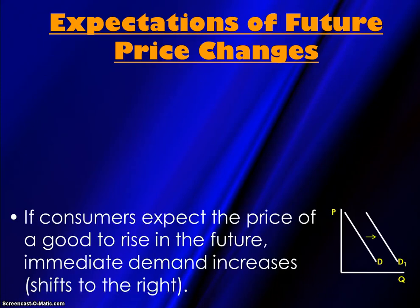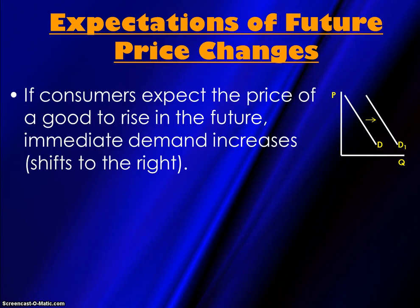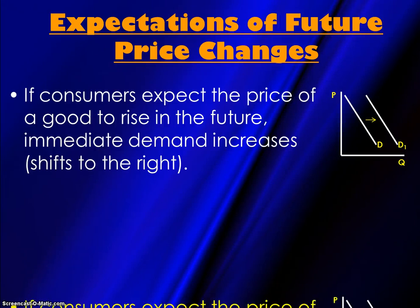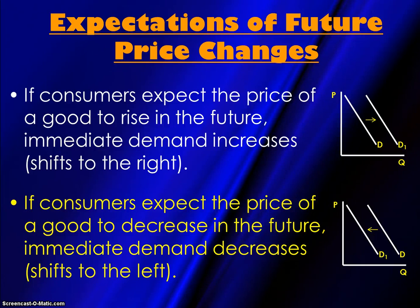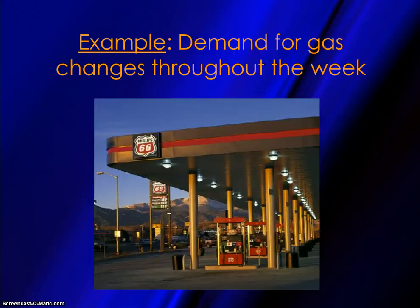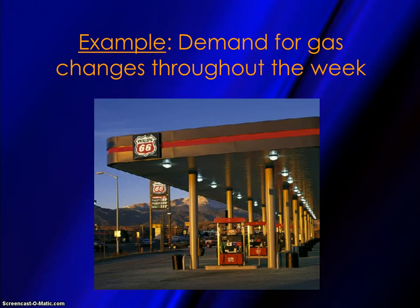The E in TIRES stands for Expectations of future price changes. If consumers expect the price of a good to rise in the future, then immediate demand will increase because people want to get the good now while it's still cheap. Or, if consumers expect the price of a good to decrease in the future, then immediate demand will decrease because people want to wait and buy it later. For example, if you're driving home from school on Thursday and you need gas, you know that on Fridays the price of gas almost always increases. Since it's Thursday and you know the price will go up tomorrow, you're probably going to decide to buy gas now. So if you expect the price to rise, your current demand will increase.